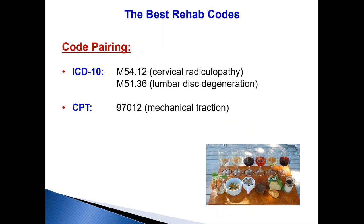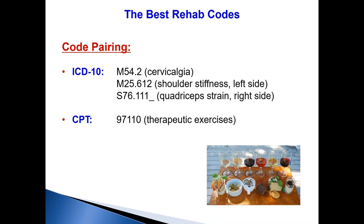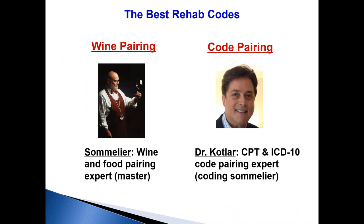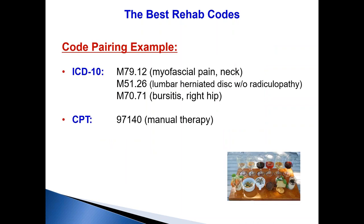Back to code pairing: cervical radiculopathy pairs beautifully with mechanical traction. Shoulder stiffness pairs fantastically with therapeutic exercises. I consider myself a coding sommelier — like a wine and food pairing expert at a fancy restaurant. I'll show you how to pair your CPT codes with your diagnosis codes. For example, a patient with myalgia of the neck muscles or myofascial pain in the neck pairs beautifully with 97140.